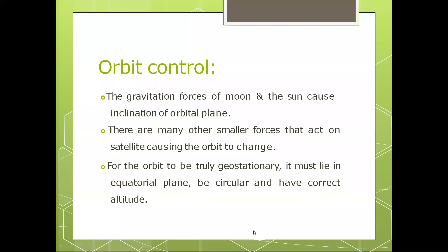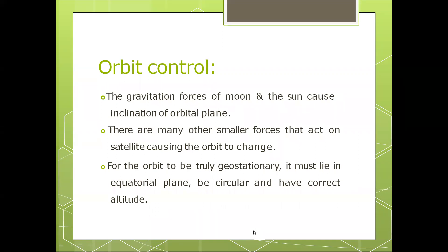This geostationary satellite is subjected to various forces acting on it with respect to the orbital sensing system. The most important forces acting on this satellite are gravitational forces provided by the moon and sun. As discussed previously, with this reason the inclination in the orbital plane and the non-spherical shape of the earth around the equator will cause the satellite to drift in an unintended direction.